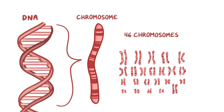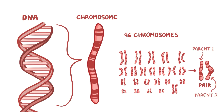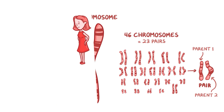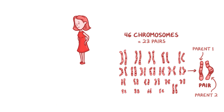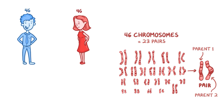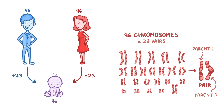Each of the 46 chromosomes is actually part of a pair of chromosomes, since you get one from each parent, so 23 pairs. Now if you wanted to make another human, first you'd have to find someone that feels the same way, and then you both contribute half of your chromosomes — one from each pair, 50-50.